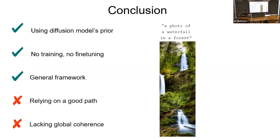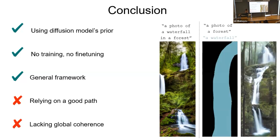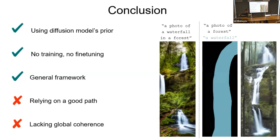Regarding the limitations of our method: since it relies on the diffusion model's prior, it depends on the quality of the text prompt and prompt engineering. For example, if we try to create an image where each crop should have a waterfall in a forest, it applies the constraint locally but doesn't achieve global coherence in the overall picture — it's not realistic to have waterfalls arranged that way. However, this problem can be mitigated by introducing a semantic layout to enforce where you want the waterfall to be located in the image.